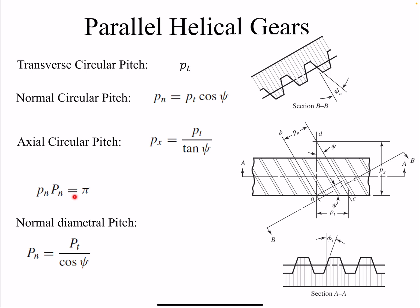Circular pitch and diametral pitch are related: circular pitch times diametral pitch equals pi. So if you know one you can find the other. For the normal pitch, pn equals pt times cosine psi. If we replace pn with pi over diametral pitch, we can get an equation for the normal diametral pitch in terms of the transverse diametral pitch and the helix angle.